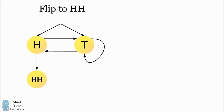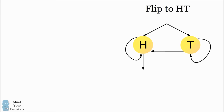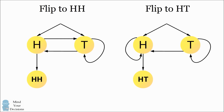Now let's consider a similar diagram if we're flipping to a heads followed by a tails. On our first flip, we can either get a heads or a tails. If we flip tails on our first toss, there's a 50% chance we'll flip another tails, and a 50% chance we'll flip a heads and transition to the state of having flipped a heads. If we're in the state of having flipped a heads, there's a 50% chance we'll flip another heads and stay in that state, and a 50% chance we'll get a tails, completing heads followed by tails. These two diagrams are not the same, suggesting the expected number of flips to each outcome may differ.